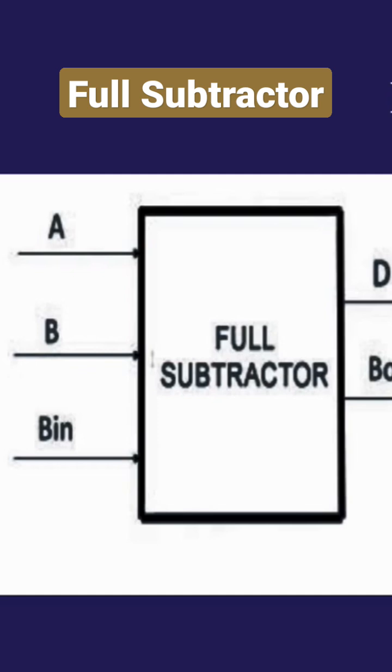There are two XOR gates which help to subtract the three numbers. Initially, A and B...